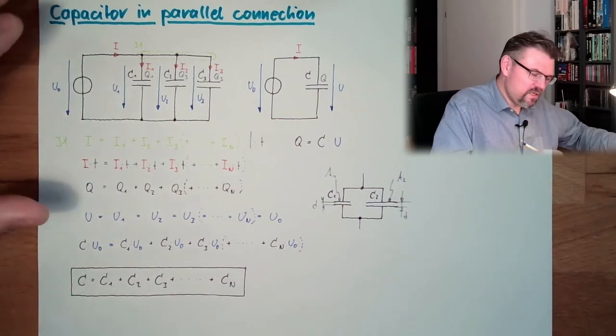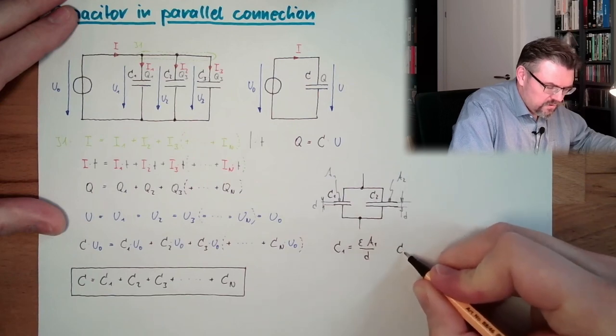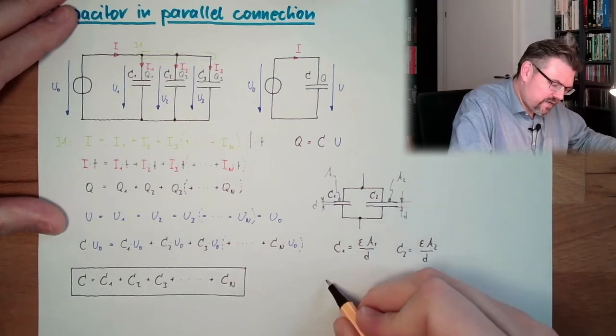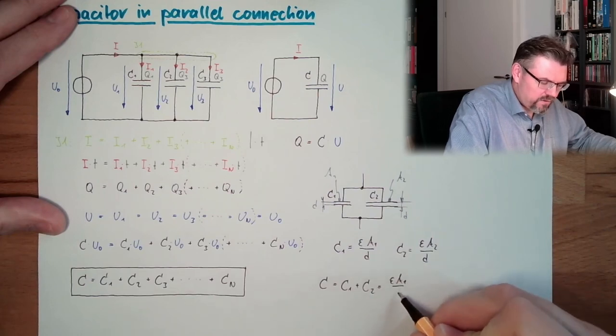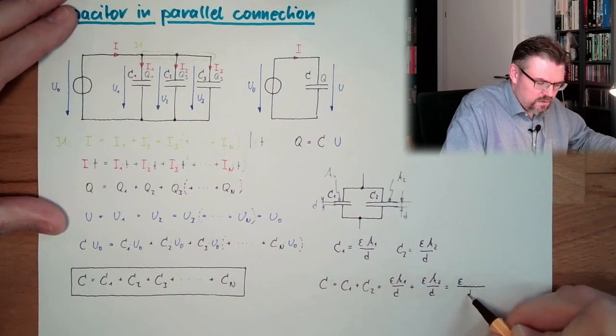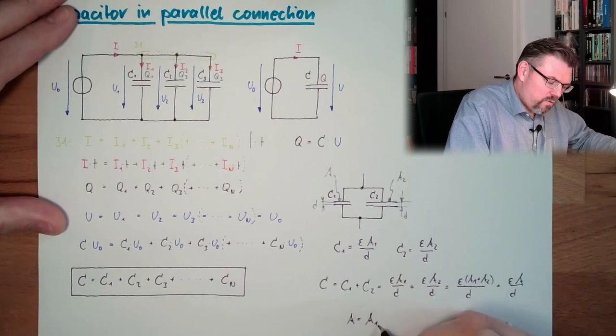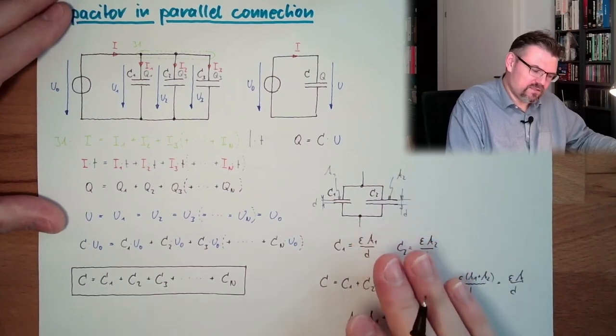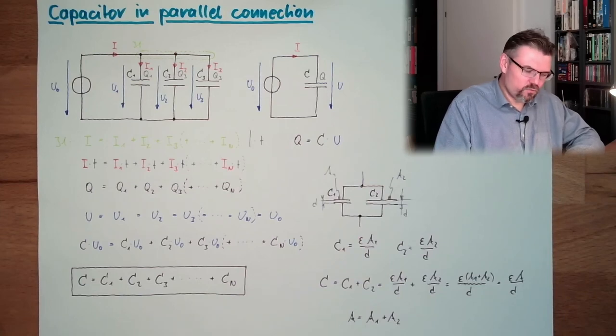Now let's write down what C1 is with our formula. C1 epsilon A1 divided by d, C2 equals epsilon A2 divided by d. And now I will set this in here. So I say C, our replacement, is C1 plus C2. So actually that's epsilon A1 divided by d plus epsilon A2 divided by d. This is epsilon d, A1 plus A2. This is epsilon A2 divided by d with A equals A1 plus A2. So the parallel connection of two resistors, capacitors, is acting like we would extend the area of two plate capacitors. So we have simply a bigger area.